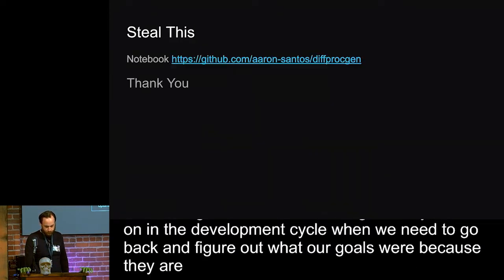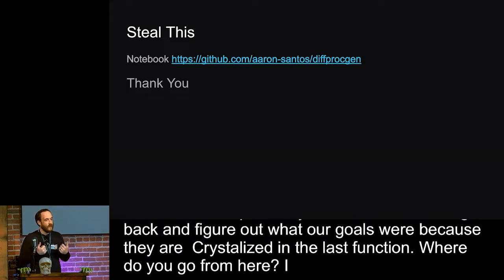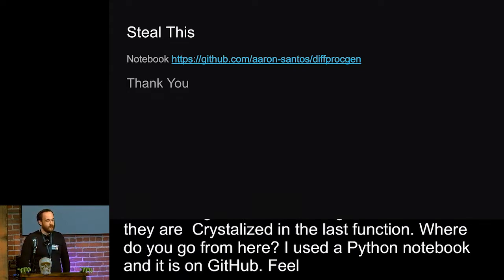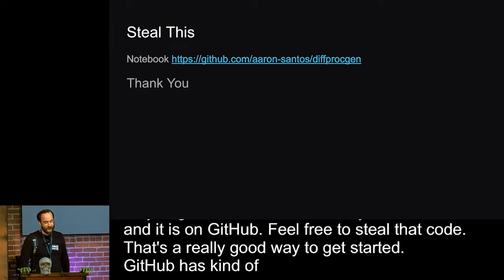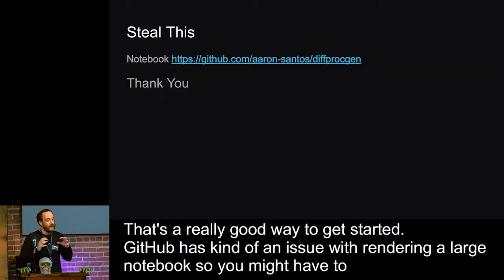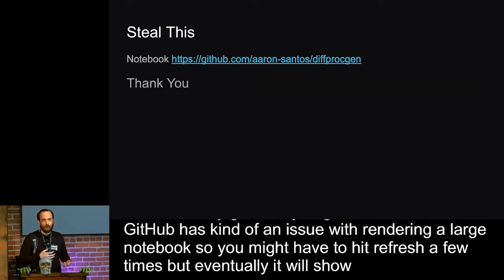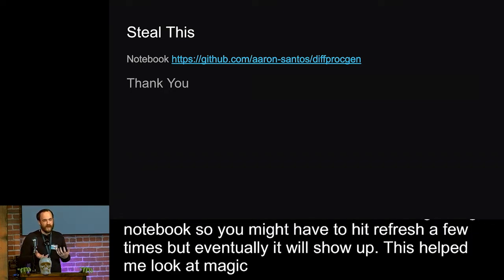So where do you go from here? I used a Python notebook to generate all these examples. That's on GitHub. So feel free to steal that code. That's a really good way to get started. GitHub has an issue with rendering a large notebook, so you might have to hit refresh a few times. But eventually it will show up. So this helped me look at magic numbers in a new light. And I hope that it helps you as well. Thank you.